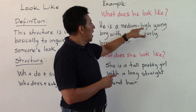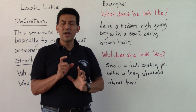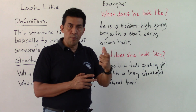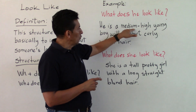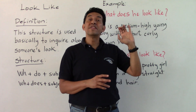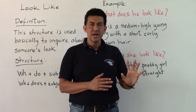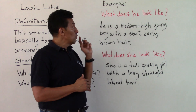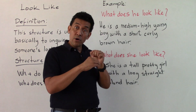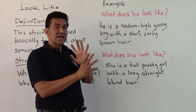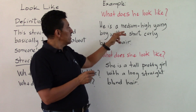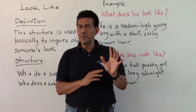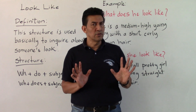He is a medium-height young boy. We start with the first description of the character we are talking about — in this case a young boy. 'Medium high' is a single adjective meaning medium height. Remember there are tall, medium, and short heights. So I say 'he is medium high,' giving an idea of his build, and then we add a description of his hair: 'with a short curly brown hair.'